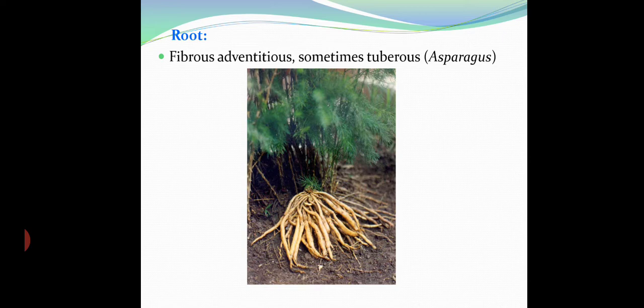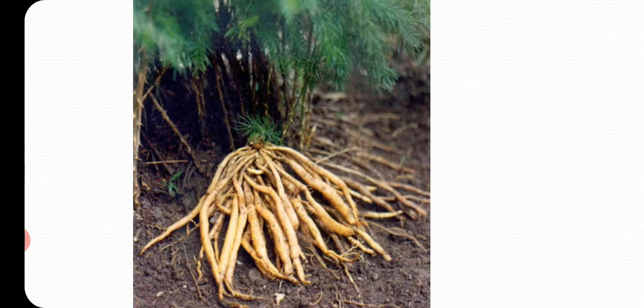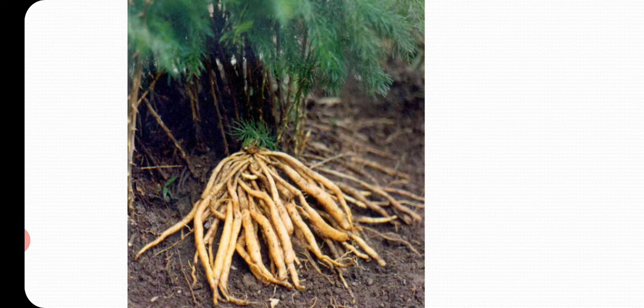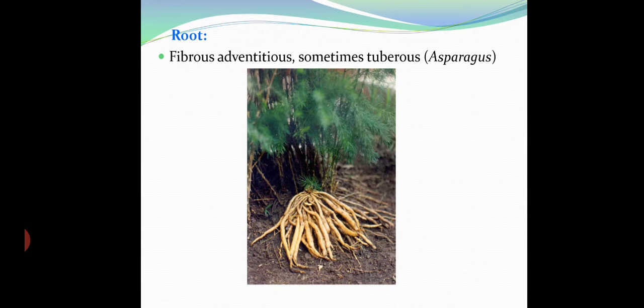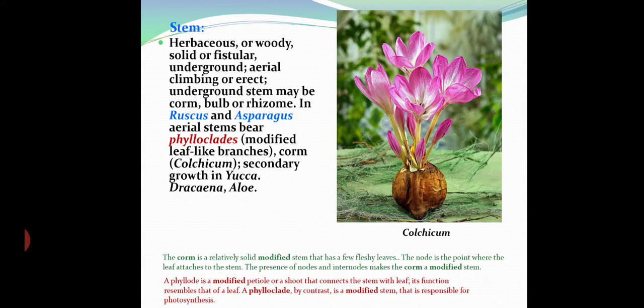Coming to roots: since this is a monocot family, the root system is fibrous, sometimes adventitious, and sometimes tuberous. The tuberous example is the Asparagus root, which has medicinal properties and is also used to make pickles, providing economic benefit to farmers.